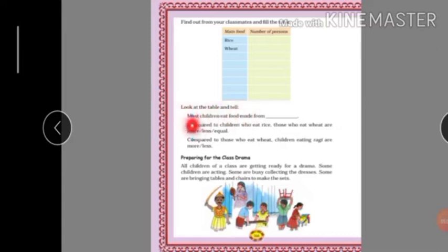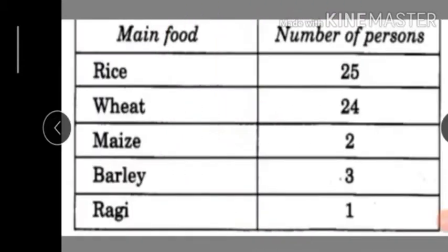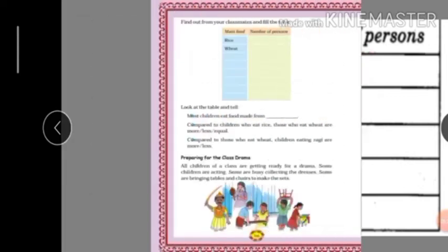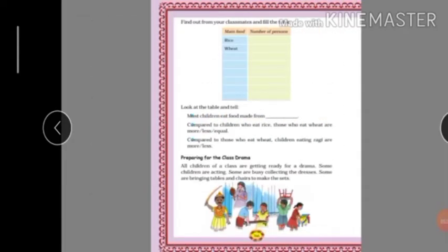Look at the table and tell: most children eat food made from what? The highest number is 25, which is rice. So most children eat food made from rice. Next question: compared to children who eat rice, those who eat wheat are more, less, or equal? Wheat is 24 and rice is 25, so children eating wheat are less than rice.